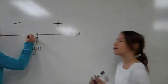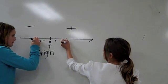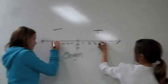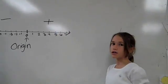Next, you mark it with numbers. On the positive side, the numbers are regular counting numbers, like 1, 2, 3, and so on.